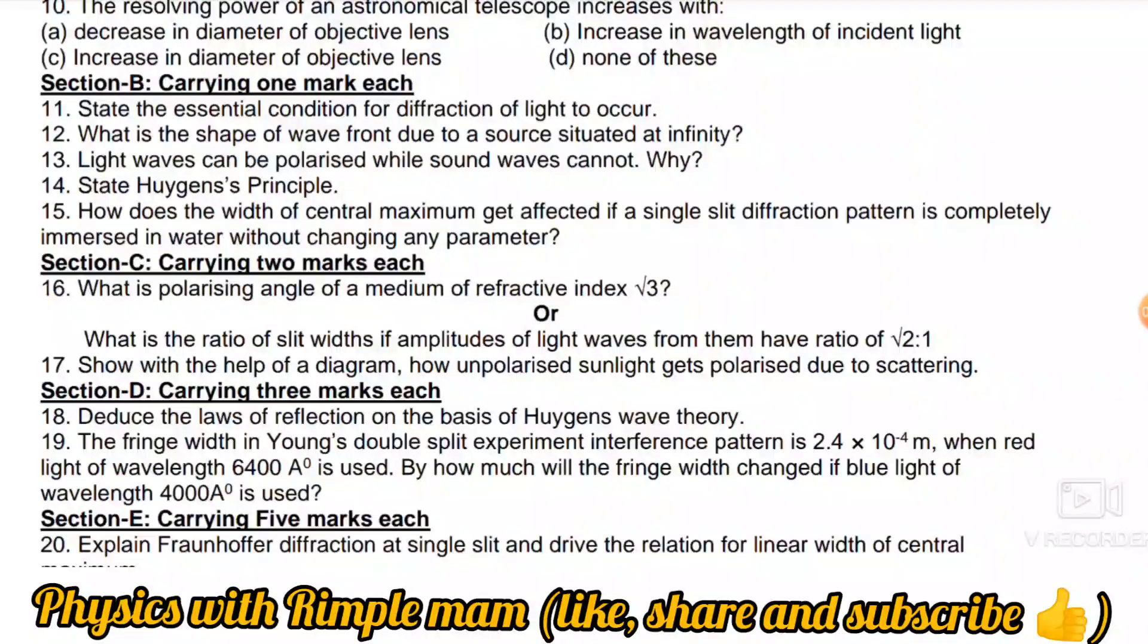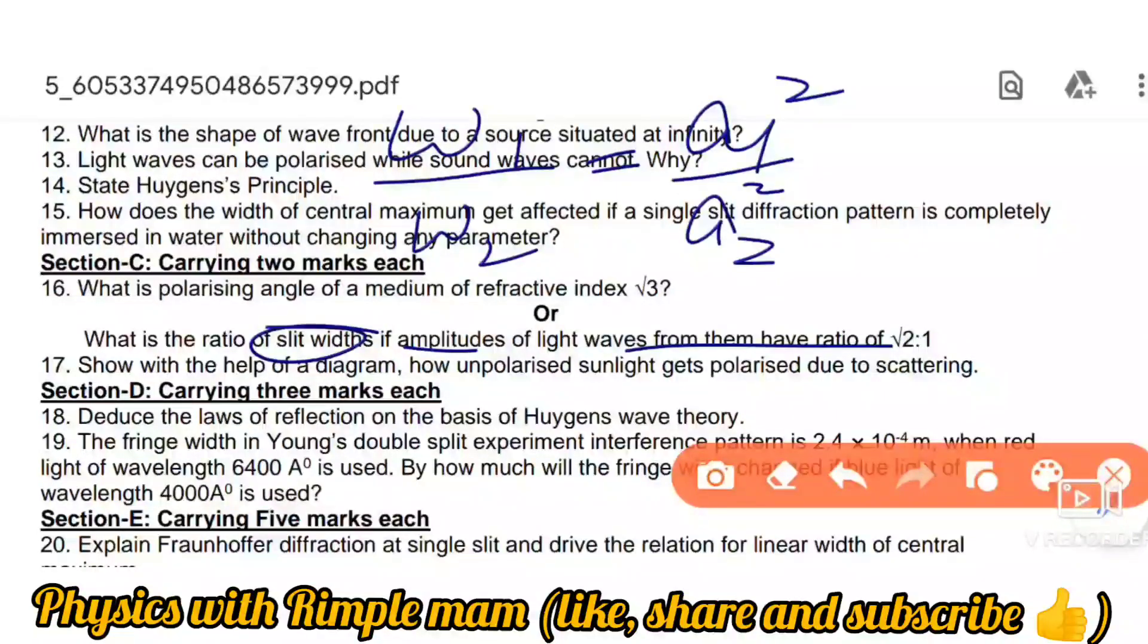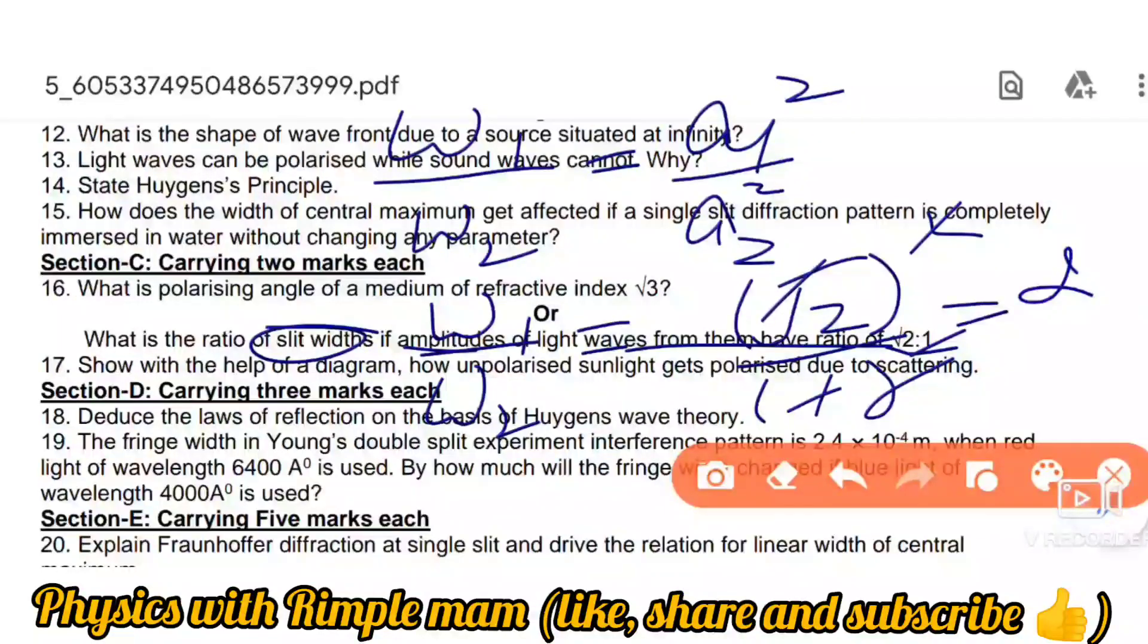Second part: What is the ratio of slit widths if amplitudes of light waves from them have a ratio of root 2:1? We need to find the width. Omega 1 over omega 2 equals a1 over a2 whole squared. Omega 1 over omega 2 equals (root 2 over 1) squared. When we square root 2, we get 2. So omega 1 over omega 2 equals 2 over 1. The answer is 2:1.